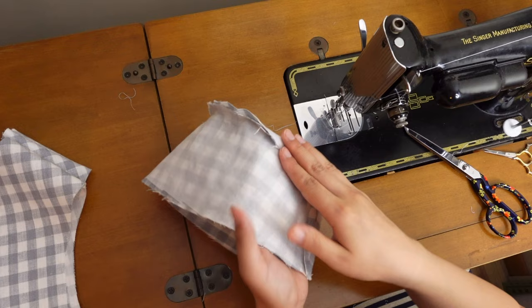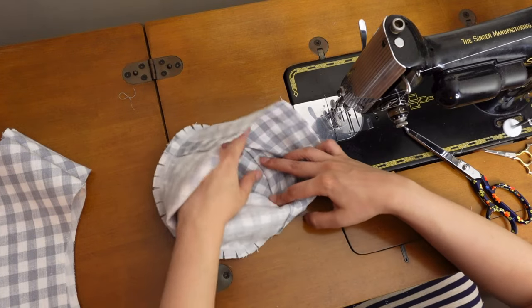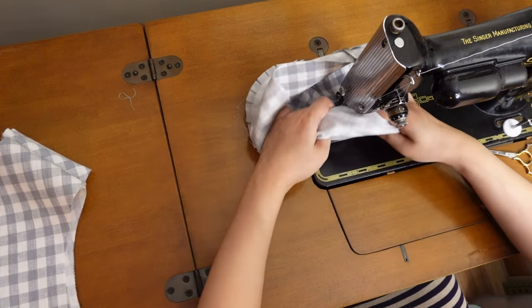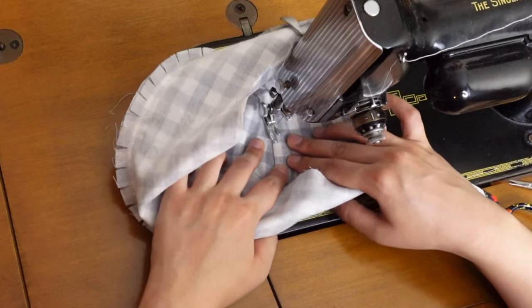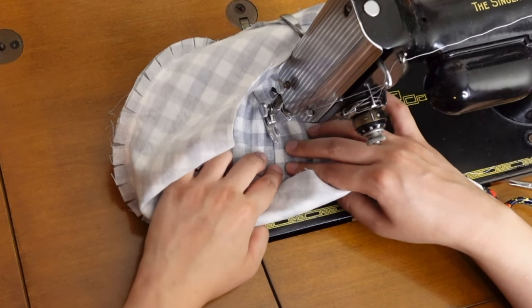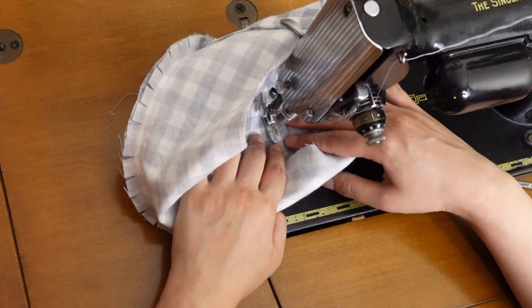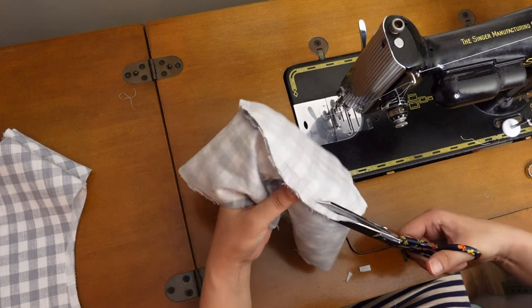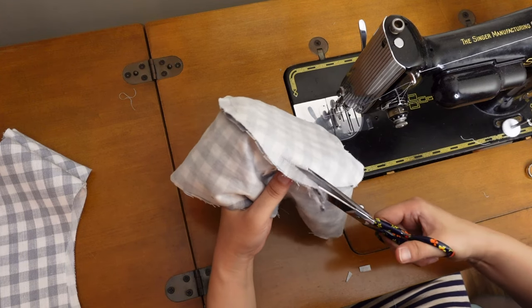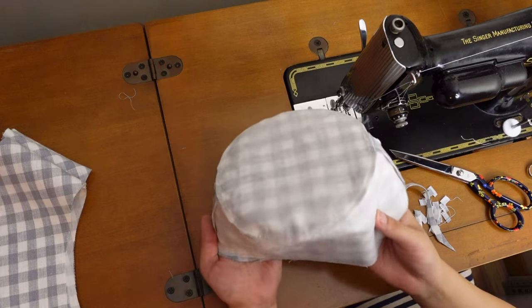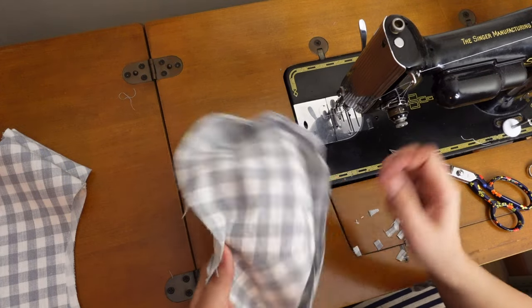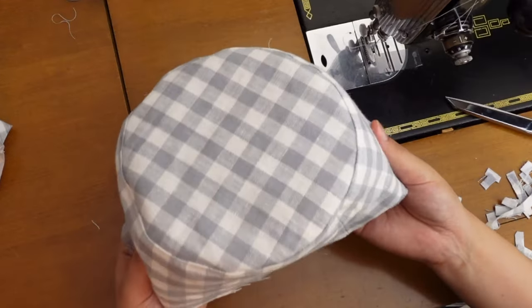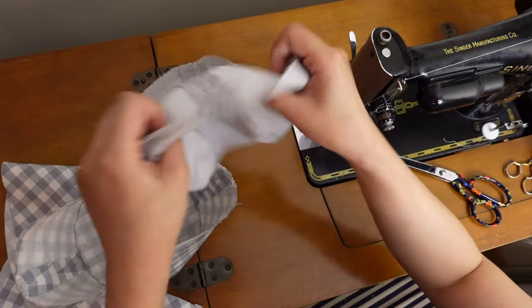Lay the seam allowances toward the side of the crown and stitch down all the seam allowances from the right side of the fabric. Trim the seam allowances into half of the width. And do the same thing to the lining pieces.